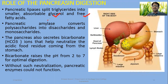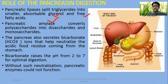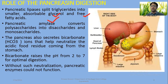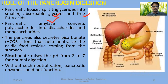Pancreatic amylase, like salivary amylase, converts starch and glycogen — which are edible polysaccharides — into maltose. If polysaccharides reach the small intestine, pancreatic amylase converts polysaccharides into disaccharides and monosaccharides.